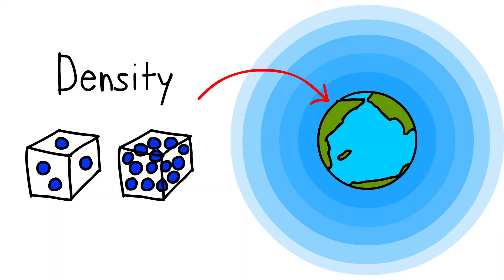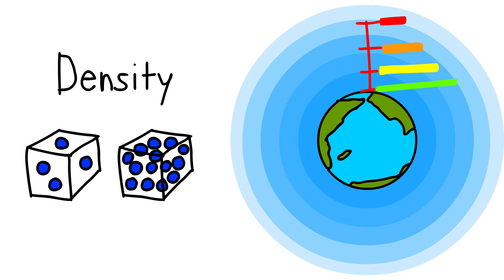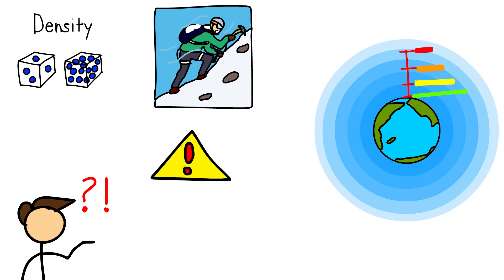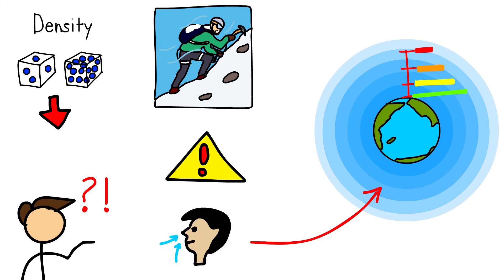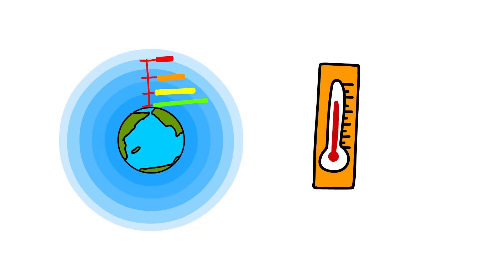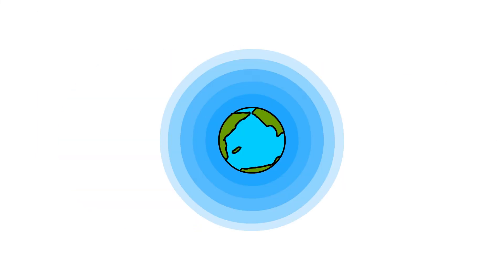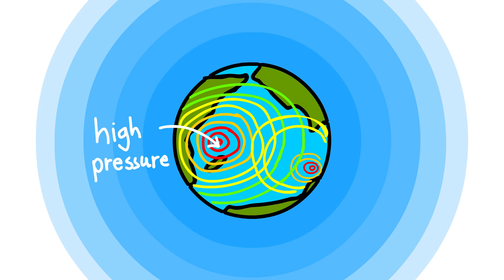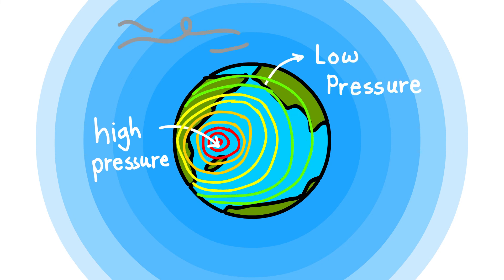The density of the atmosphere varies with height. It is maximum at sea level and decreases rapidly as we go up. Climbers experience problems in breathing due to this decrease in the density of air, and have to carry oxygen cylinders to breathe at high altitudes. Temperature also decreases as we go upwards. The atmosphere exerts pressure on the Earth, which varies from place to place — some areas experience high pressure and some low pressure. Air moves from high pressure to low pressure, and moving air is known as wind.